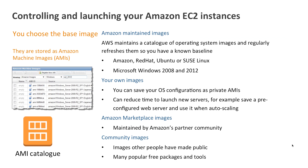When you start an Amazon EC2 instance, you choose the base image. We keep these as Amazon Machine Images, or AMIs. We maintain a catalogue of popular operating system images, refresh these on a regular basis, patch them, and do some baseline configuration on them.